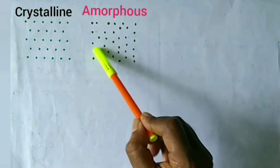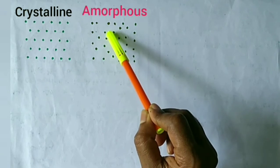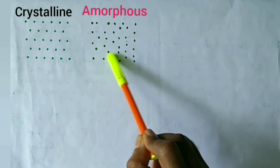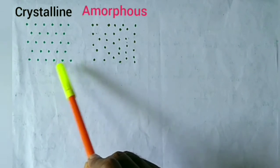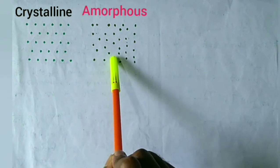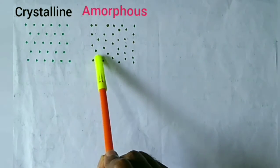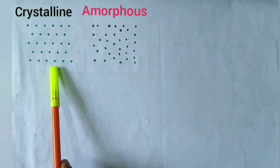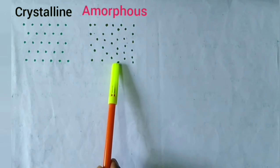But in this figure, there is no regularities between its arrangement. So we found from these two figures that there is the difference between the arrangement of the atom, molecules, or group of atoms.